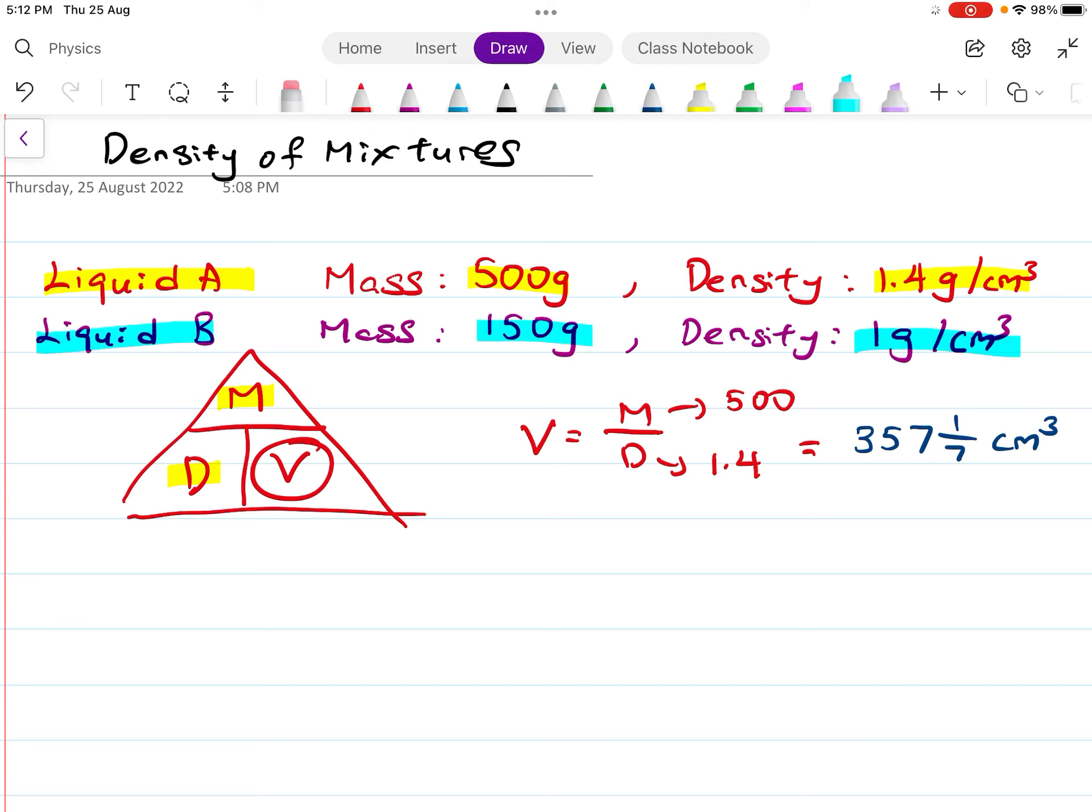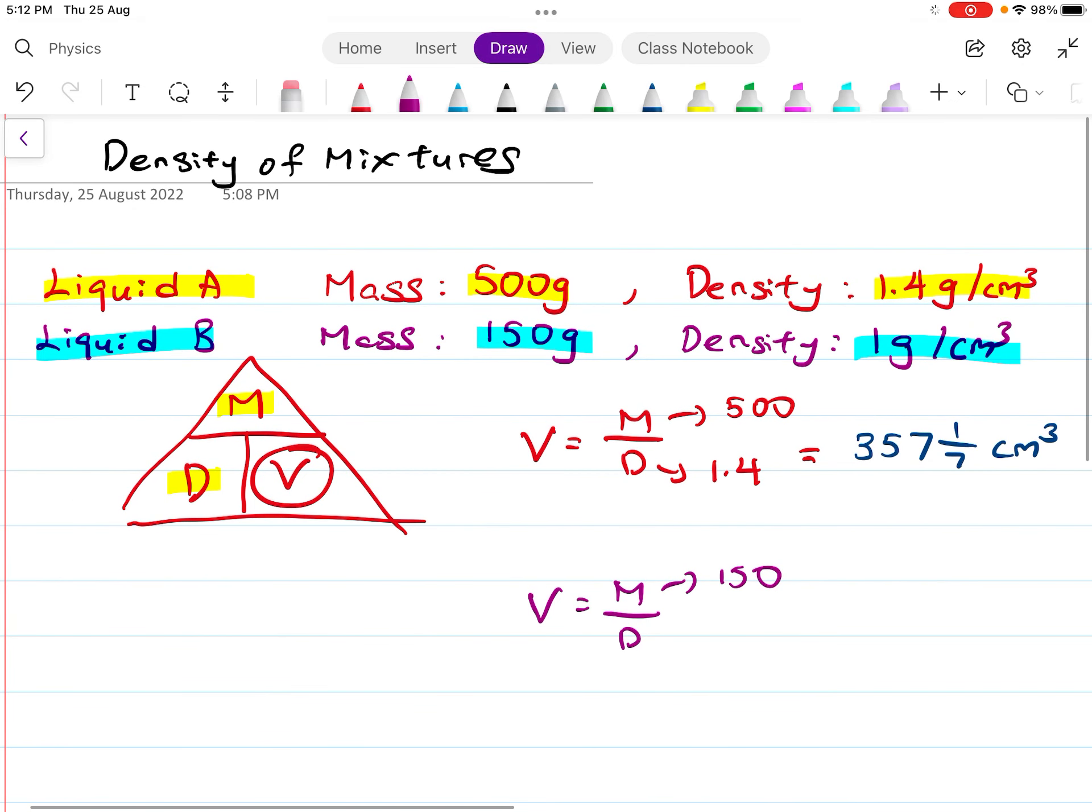Volume equals mass divided by density. Mass is 150, density is 1, so this equals 150 cm³. Now we have the respective volumes, so we just add them up to give the total volume of the mixture.